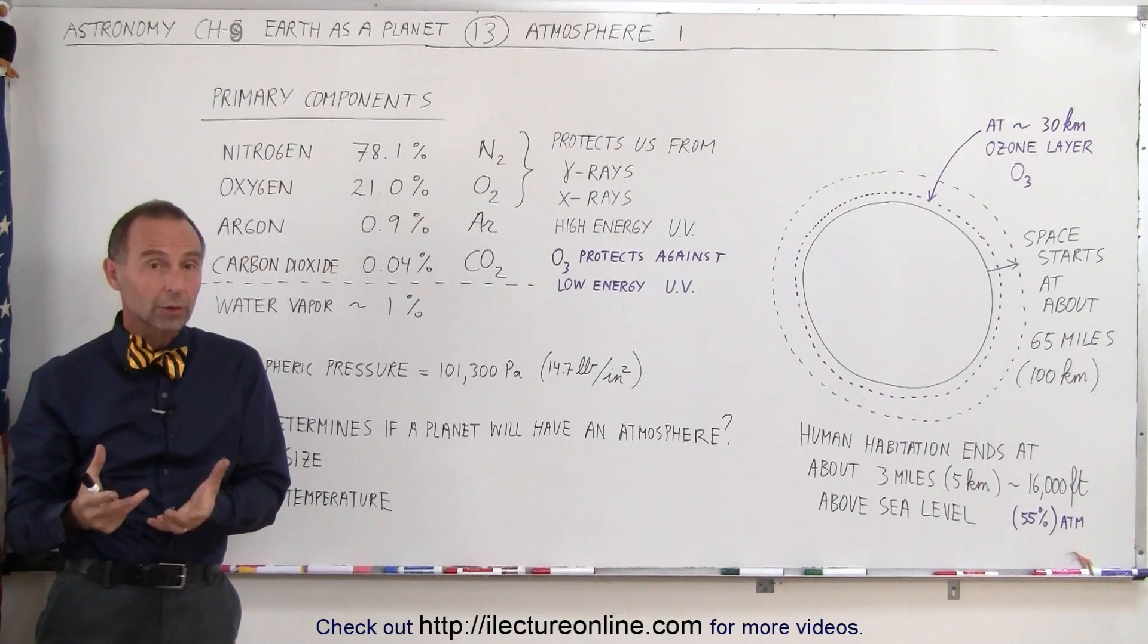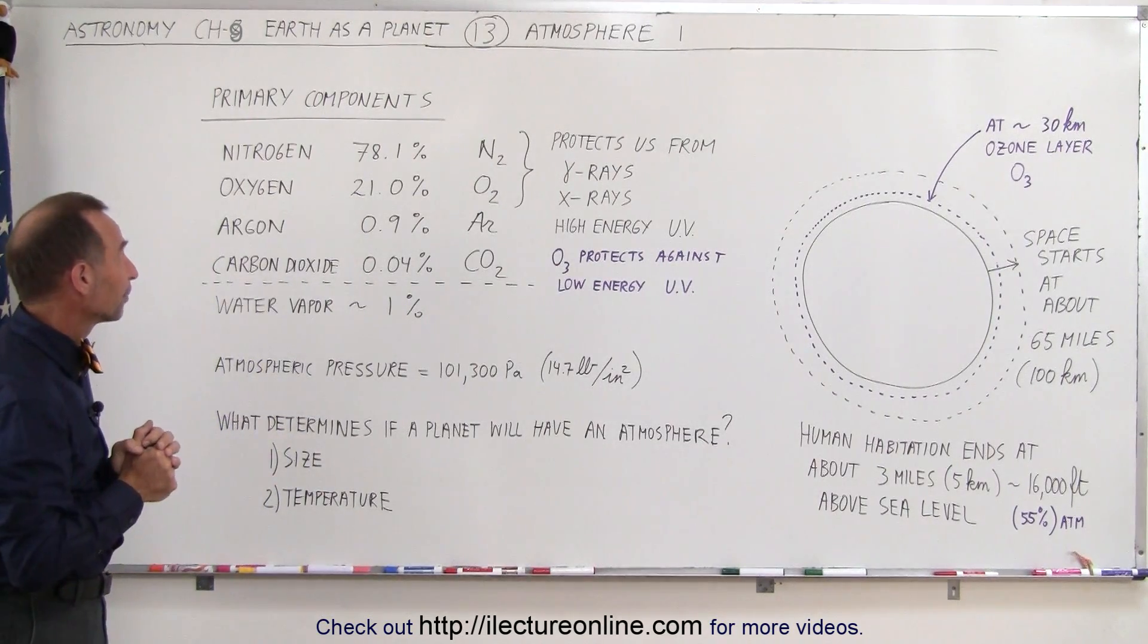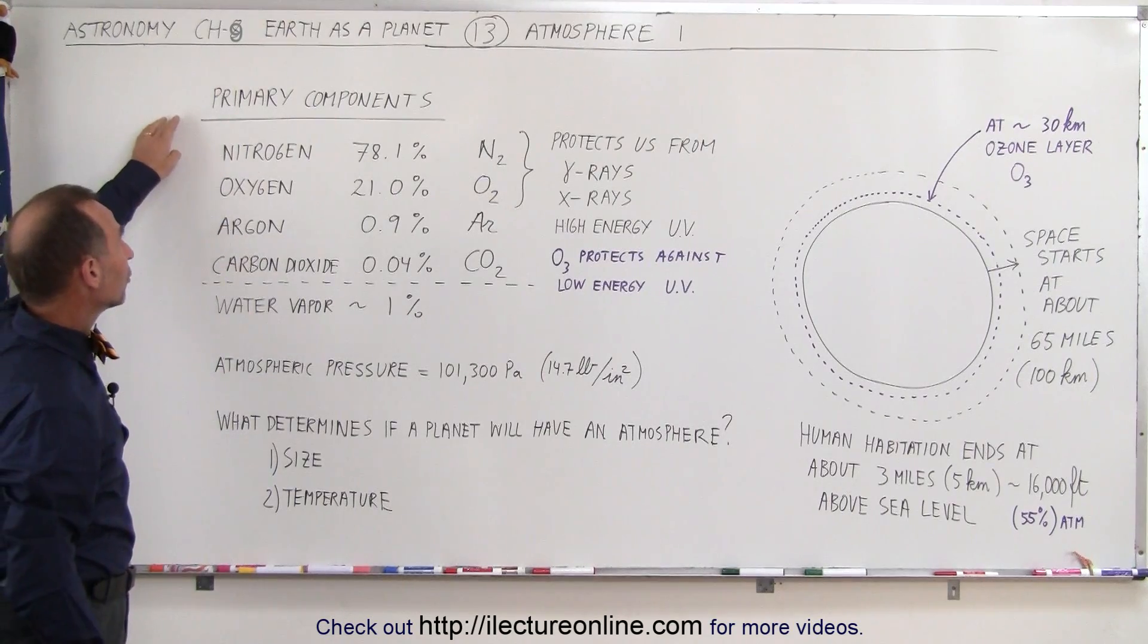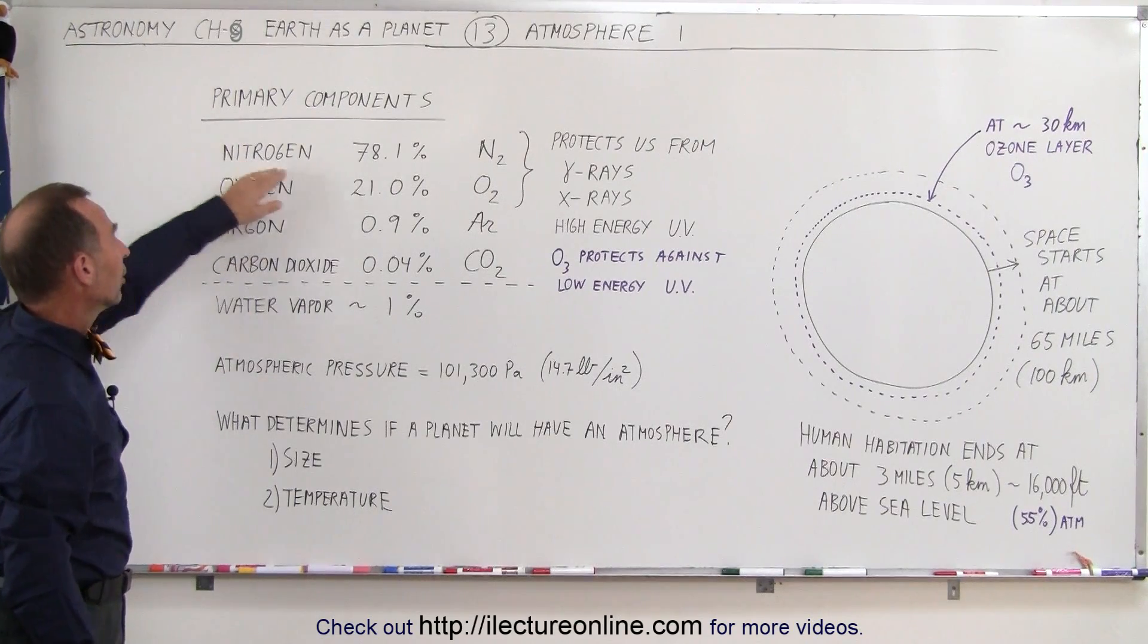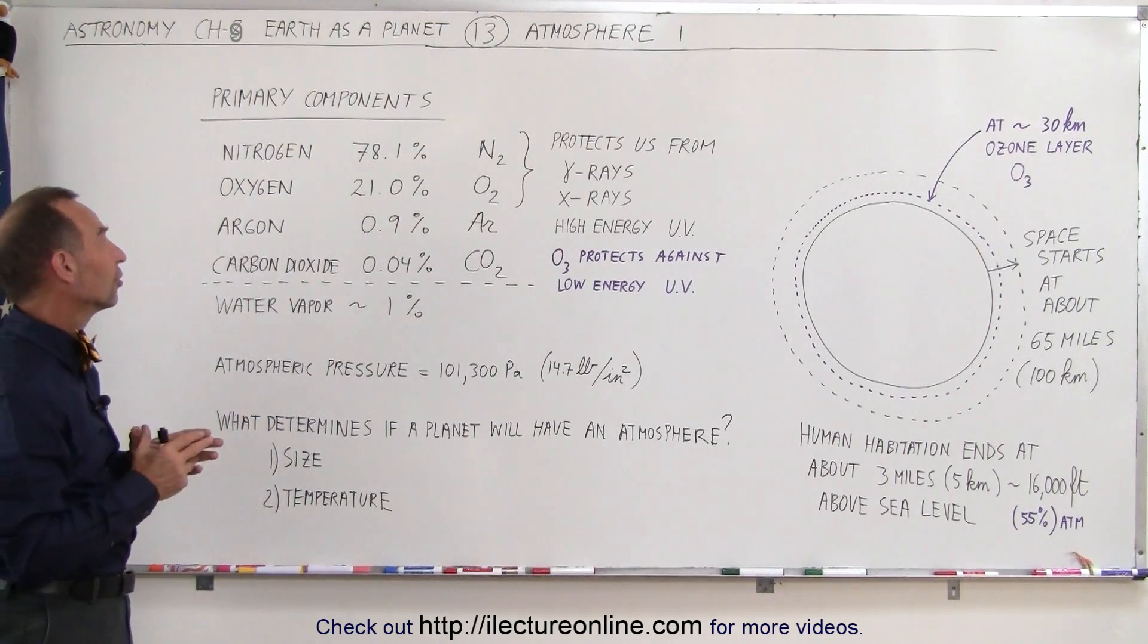The atmosphere, of course, plays a big role in the possibility of life existing. The primary components in the atmosphere of the Earth are nitrogen, number one. 78.1% of the Earth's atmosphere is nitrogen.